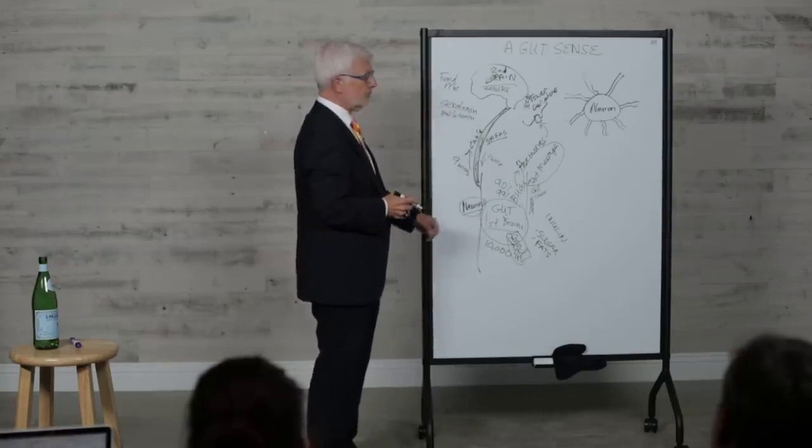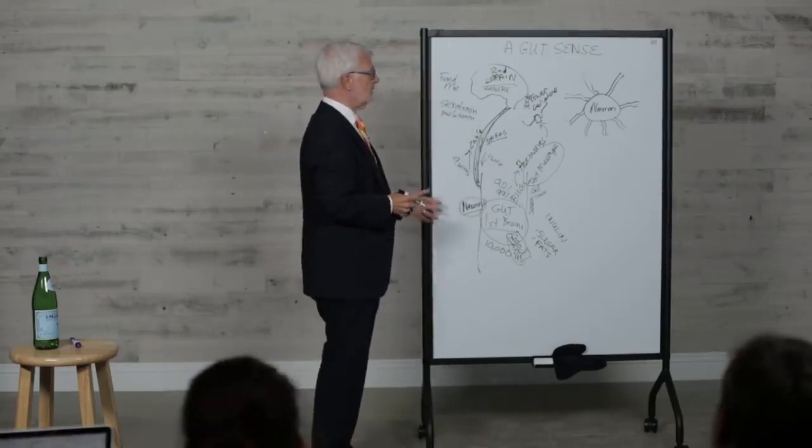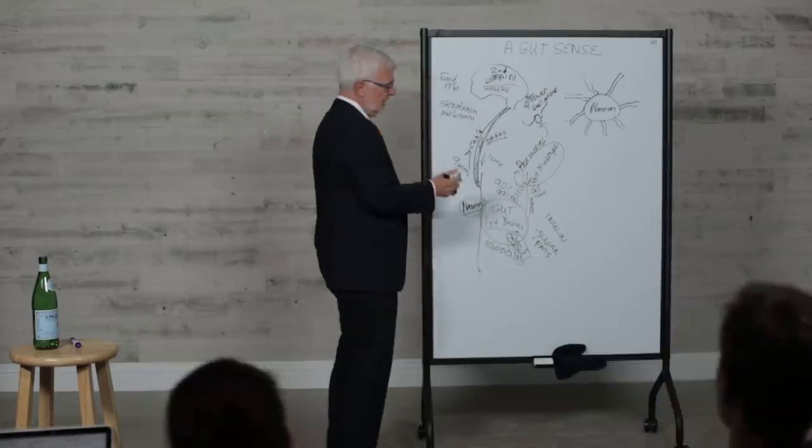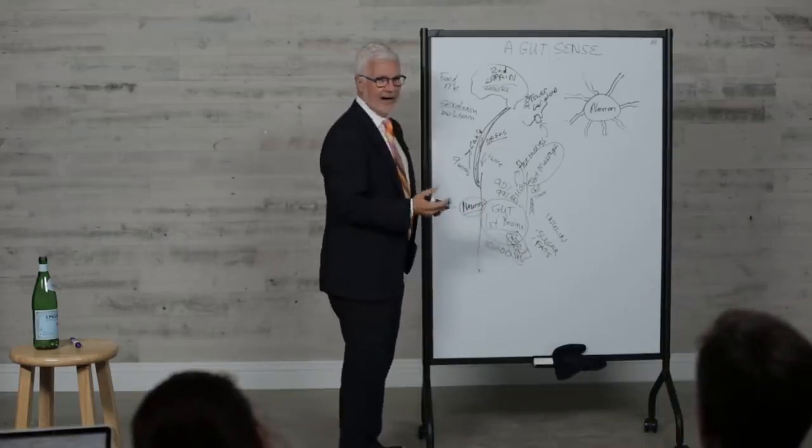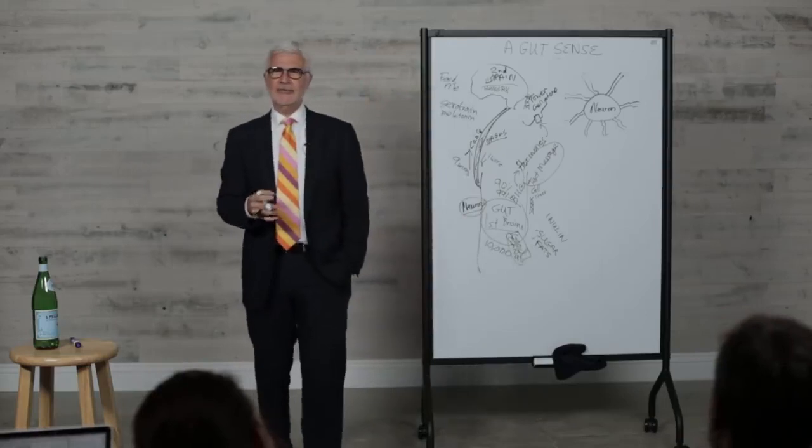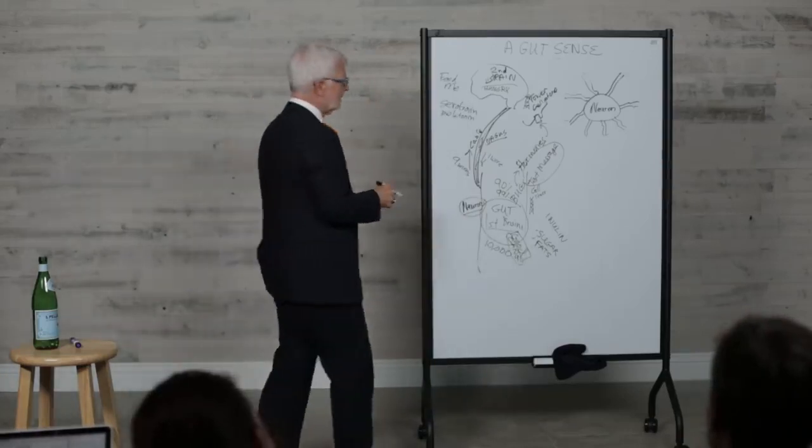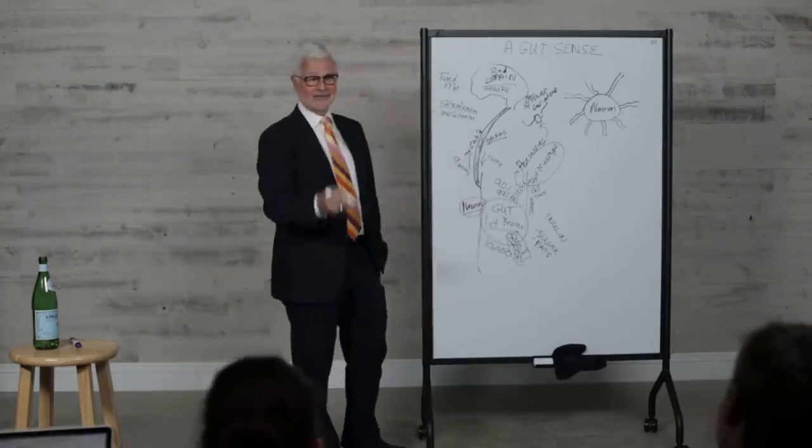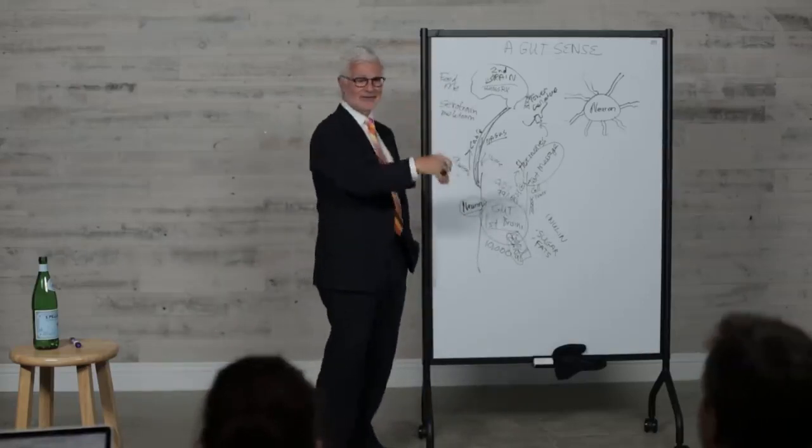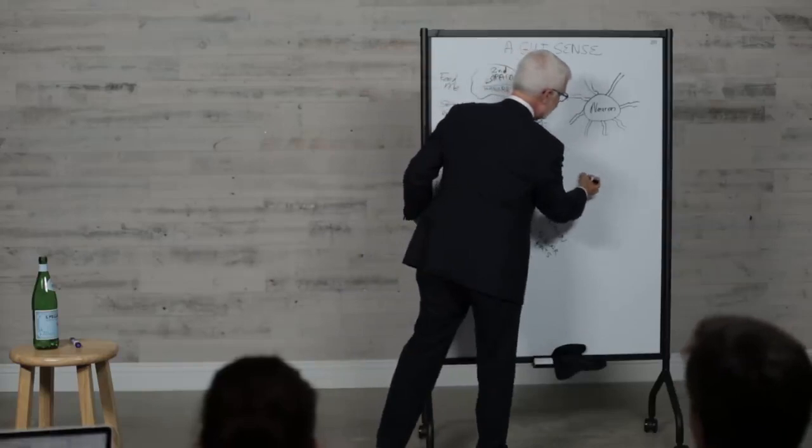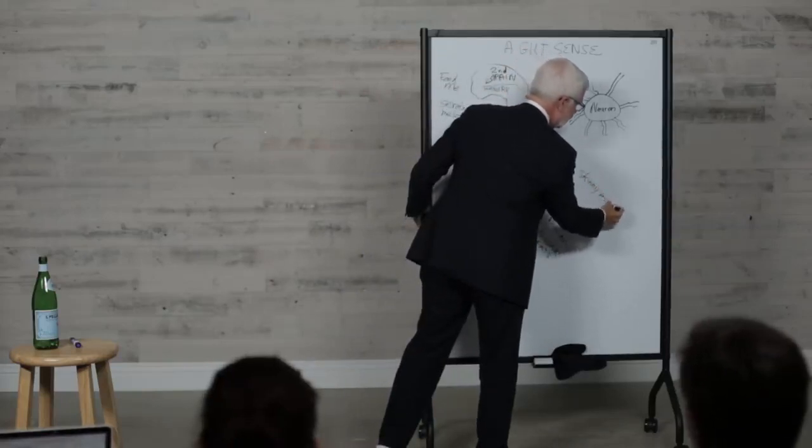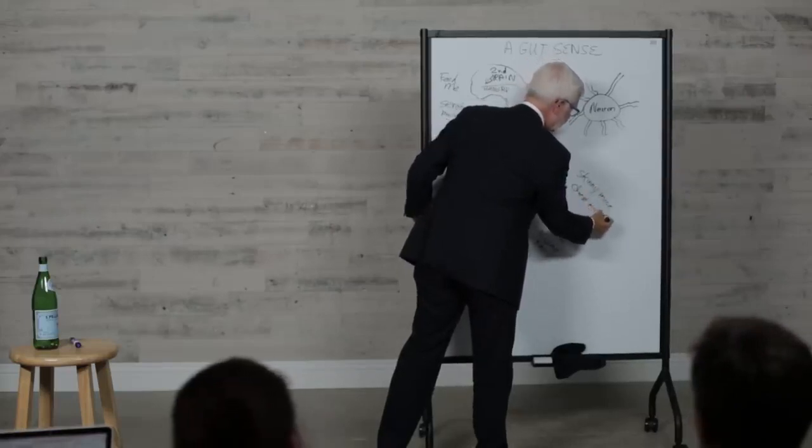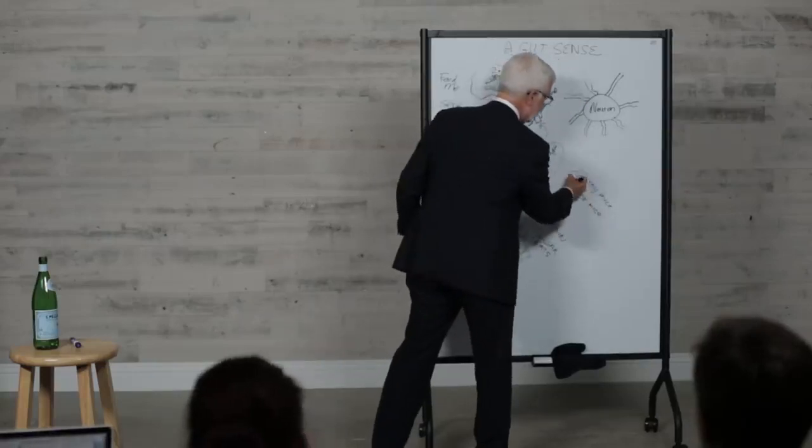There's been some beautiful experiments with germ-free mice who don't have any bugs in their gut. The nice thing about working with rats and mice is they love to eat each other's feces. You just give them the other rat's feces. They take the skinny mice and give them the feces from obese mice, and lo and behold, the skinny mice will become obese.